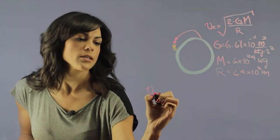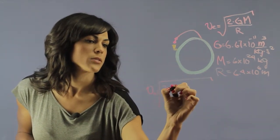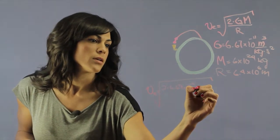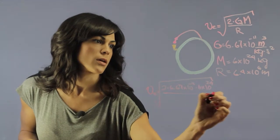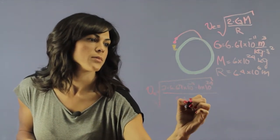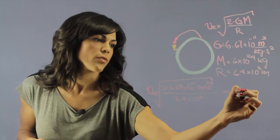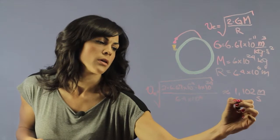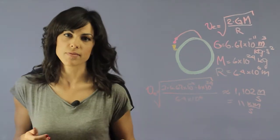Now if we plug it into our escape velocity, we have 2 times 6.67 times 10 to the minus 11 times 6 times 10 to the 24th, divided by 6.4 times 10 to the 6. When we calculate this, this gives us about 1,102 meters per second, which is about 11 kilometers per second, and that's equal to 25,000 miles per hour.